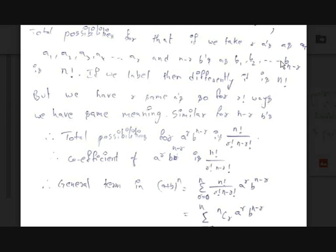After dividing by r! it becomes n!/r!. Similarly we have (n-r) identical b's, so we divide by (n-r)! too. It becomes n!/(r!·(n-r)!). This is how we find the coefficient of the general term in a binomial expansion — the coefficient of a^r·b^(n-r) is n!/(r!·(n-r)!), which is nCr.